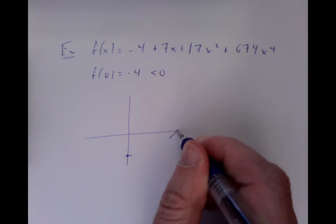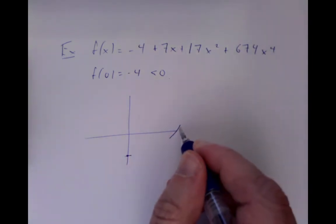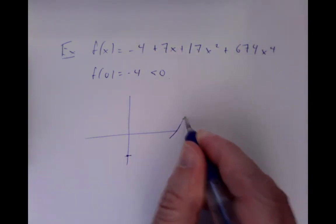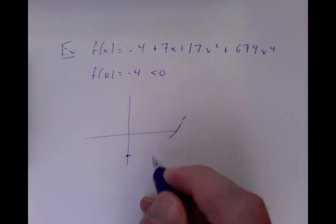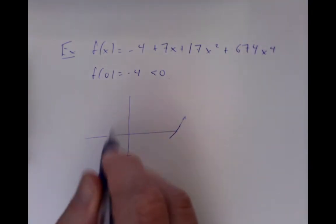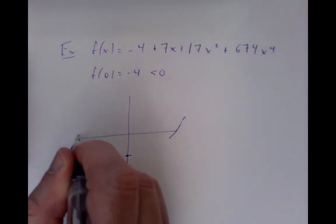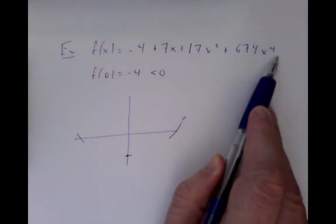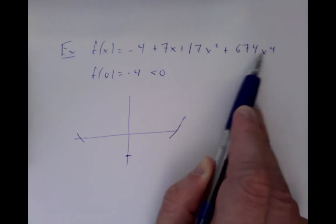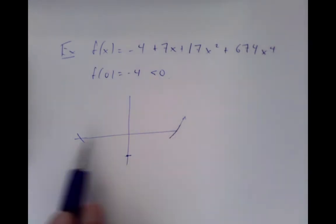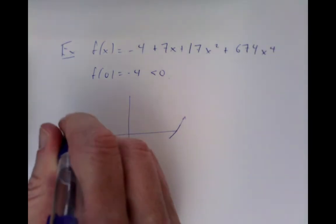So if x is very large, the function was negative at zero, so at some point it has to become positive, and after it becomes positive, it stays positive forever. For large negative x, because this is an even power, you get the same sign as for large positive x. So it becomes and stays positive in both directions for very large x.